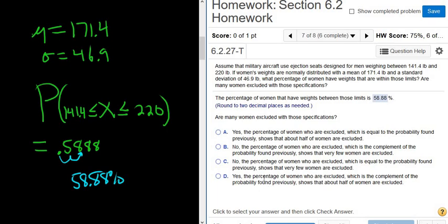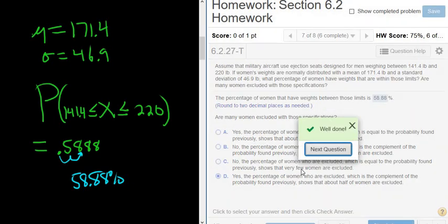I think it's this one. Yes, the percentage of women who are excluded, which is the complement of the probability found previously, shows that about half of women are excluded. That's about right. It's about half, not quite. It's a little over 40%. Let's try that one. And that's it. I hope that made sense.